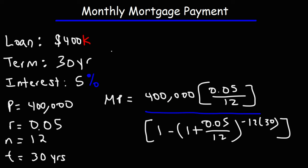So let's do this one step at a time. So it's going to be 400,000 times 0.05 divided by 12. That's 1,666.66 repeating.